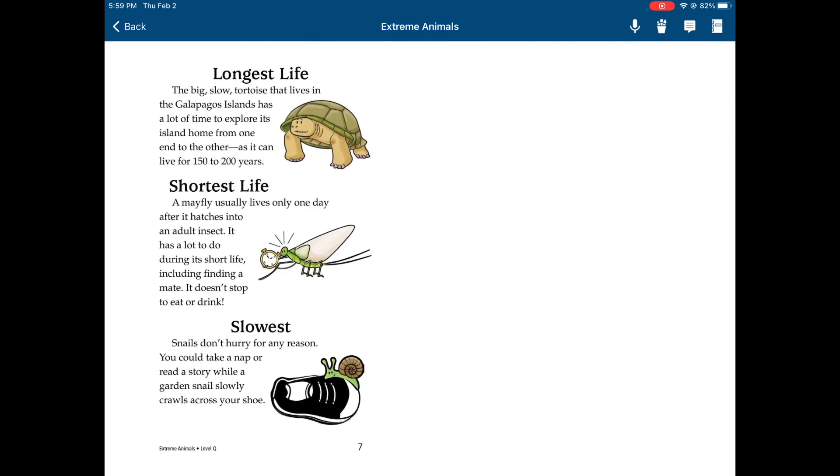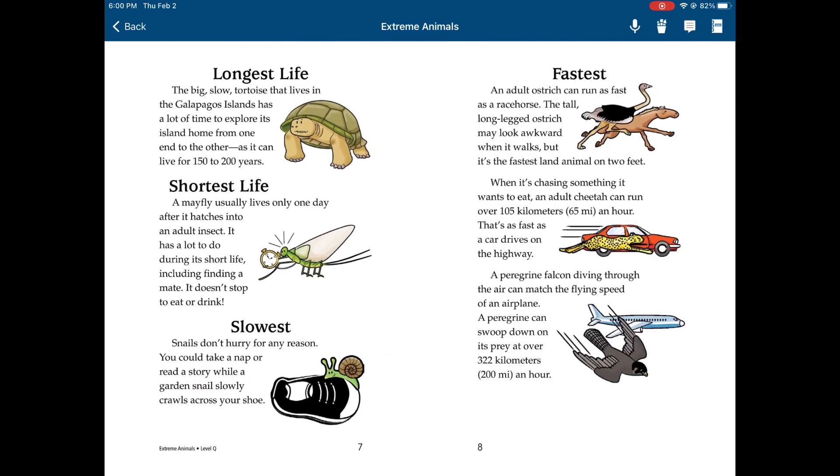Longest life. A big, slow tortoise that lives in the Galapagos Islands has a lot of time to explore its island home, from one end to the other, as it can live for 150 to 200 years. Shortest life. A mayfly usually lives only one day after it hatches into an adult insect. It has a lot to do during its shortest life, including finding a mate. It doesn't stop to eat or drink.